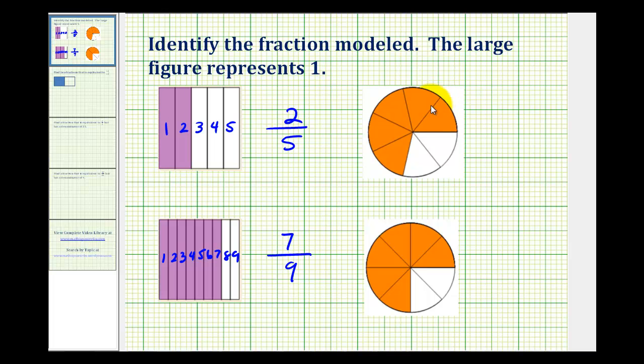And then for the third example, notice how this circle is divided into one, two, three, four, five, six, seven equal pieces. So our denominator is seven, and five of the seven pieces are shaded. So this represents five-sevenths.